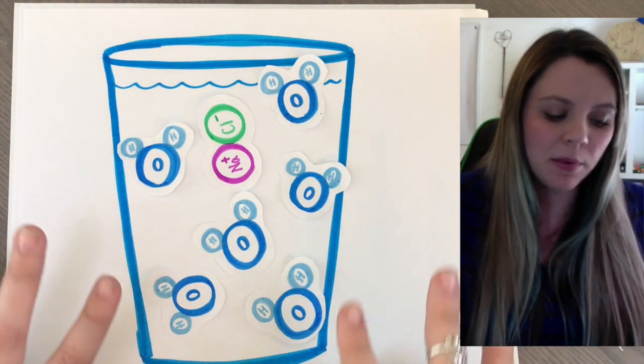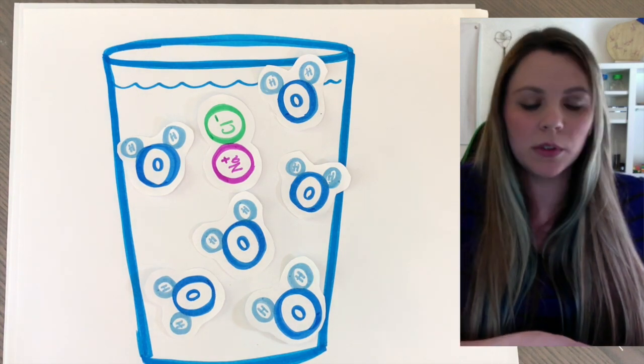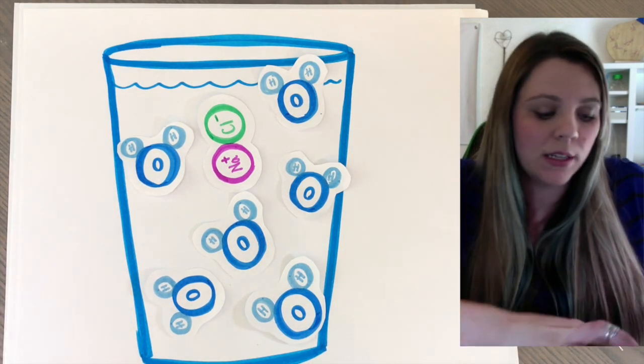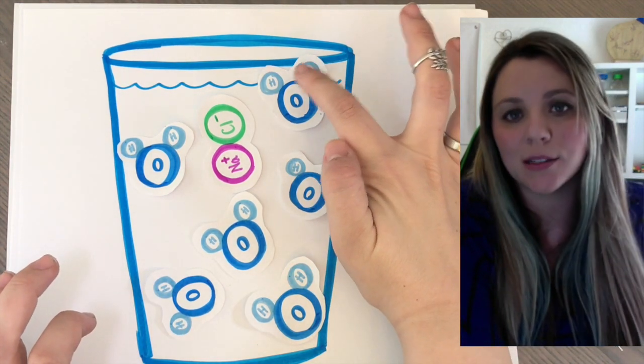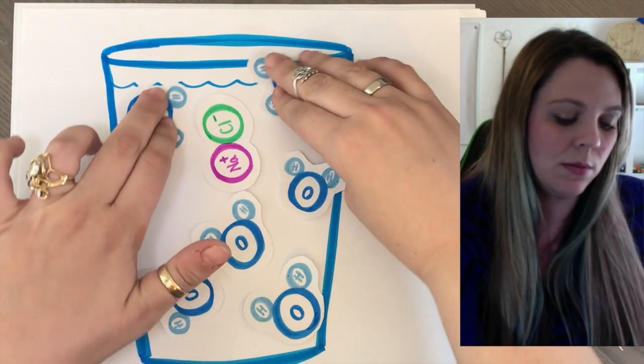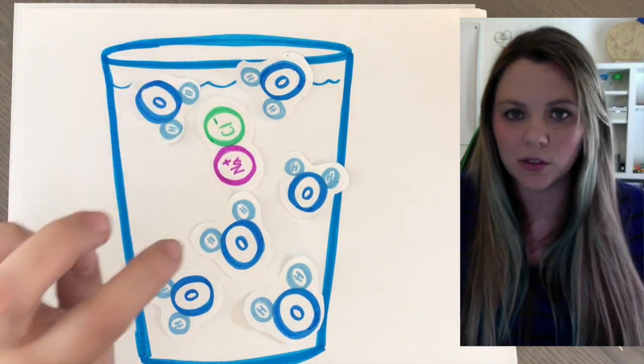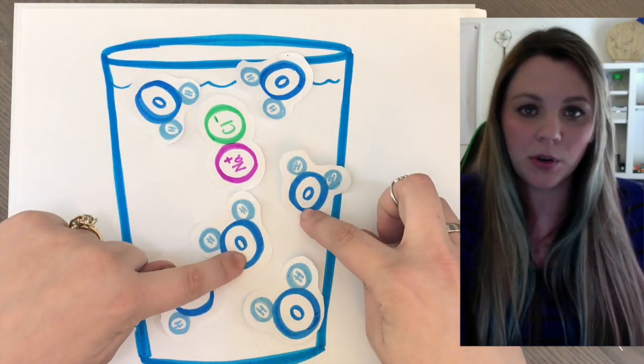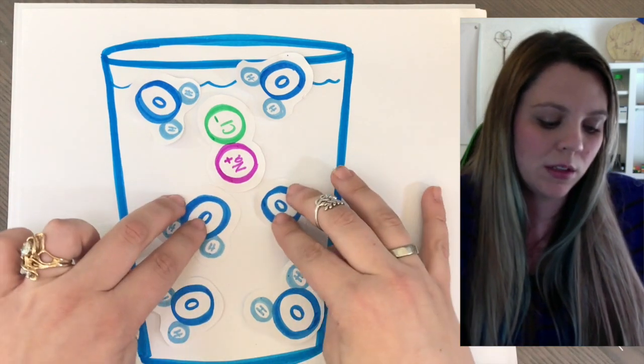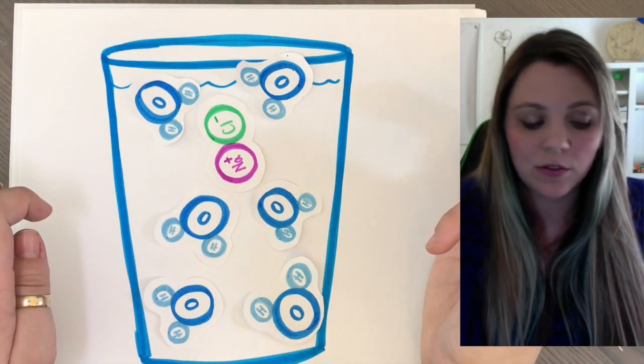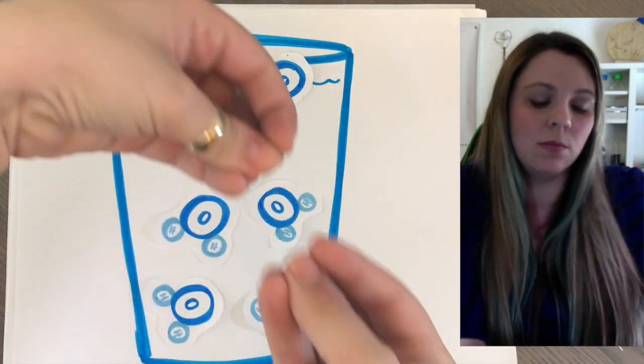What actually ends up happening, because water's awesome, is water will flip itself around, it will orient itself so that the partial positive side of hydrogen is going to be facing the negative side of whatever the salt is, so in this case, chlorine, and the partial negative side of water, so oxygen, is going to orient itself towards the partial positive side of your salt. And it's actually going to be able to pull the salt apart, going to be able to dissolve it.